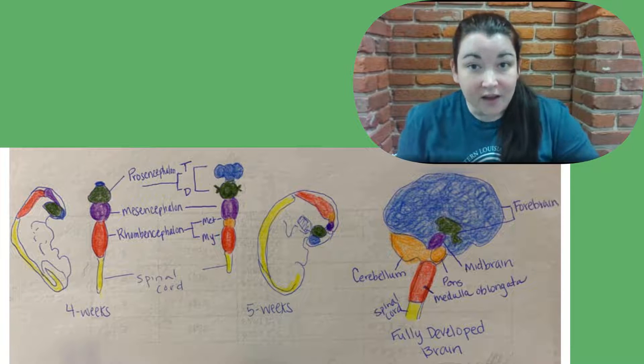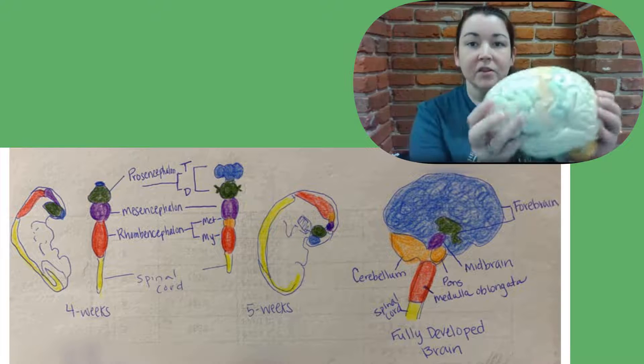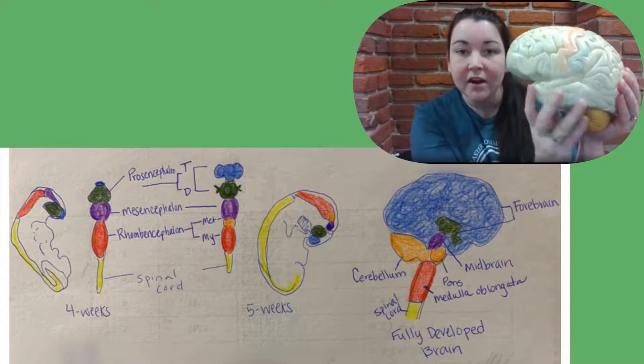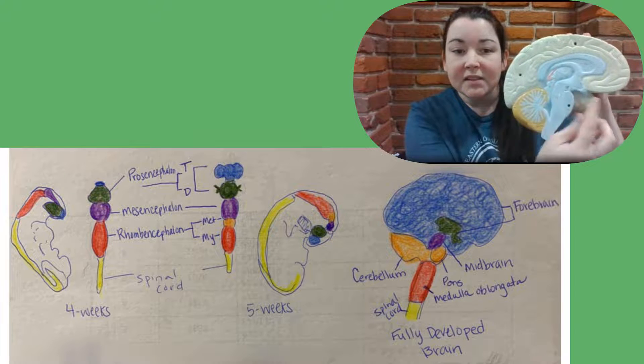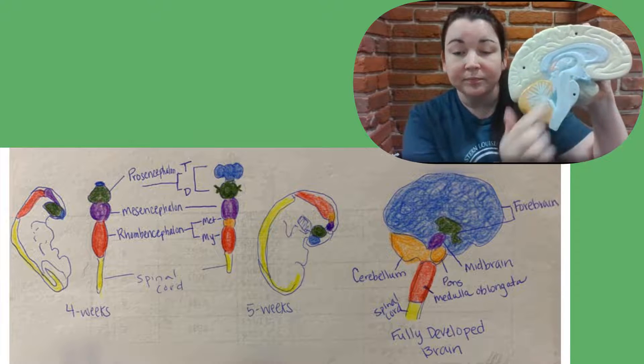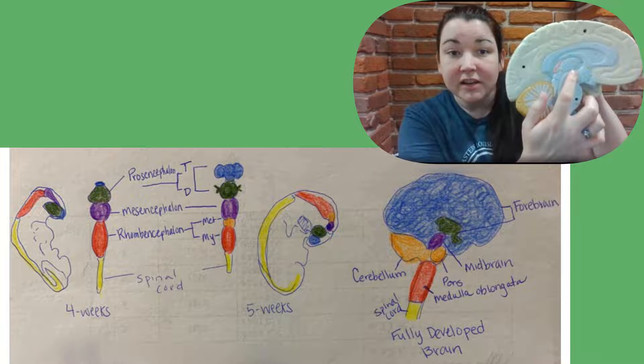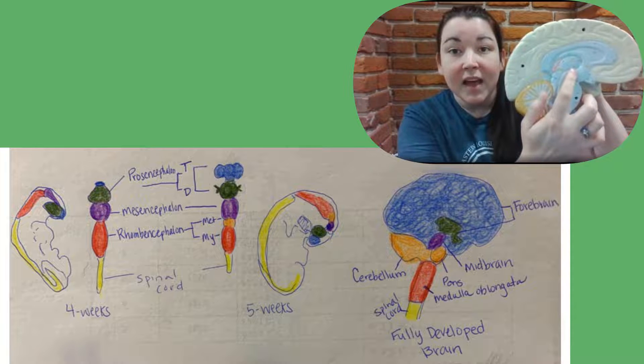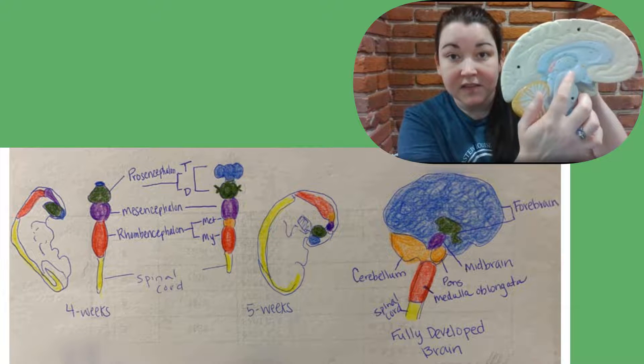The diencephalon will end up forming more of the inner workings of the brain. If you have the lobes here, flip it around, and do you see the seahorse? This is known as your hippocampus. The diencephalon forms your thalamus here, kind of at the cheek of the seahorse, and the hypothalamus here, closer to the nose-mouth area of the seahorse.